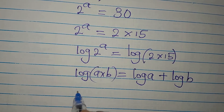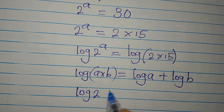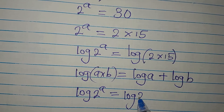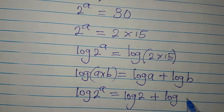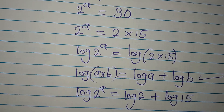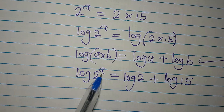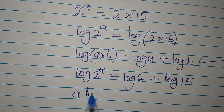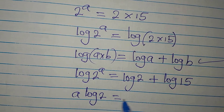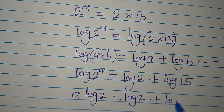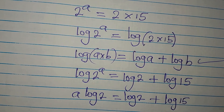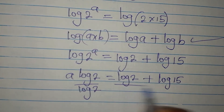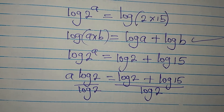So log of 2 to the power of a equals log 2 plus log 15. Since the power a cannot stay in the exponent, we bring it down: a times log 2 equals log 2 plus log 15. Then we divide both sides by log 2.